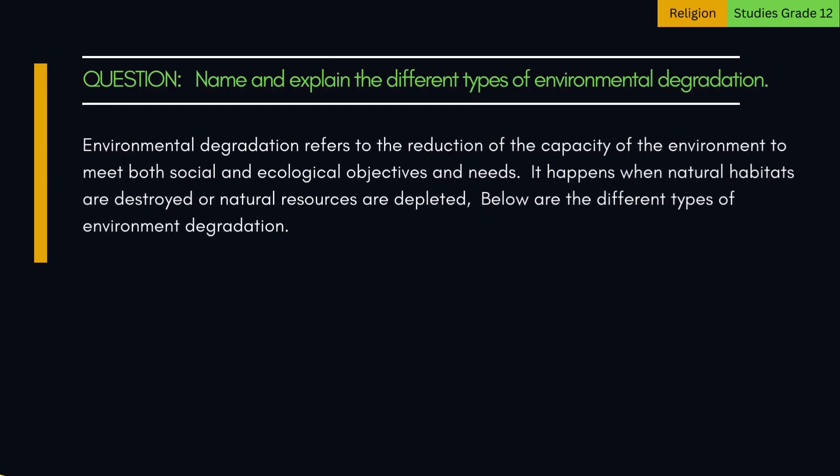Environmental degradation refers to the reduction of the capacity of the environment to meet both social and ecological objectives and needs. It happens when natural habitats are destroyed or natural resources are depleted. Below are the different types of environmental degradation.